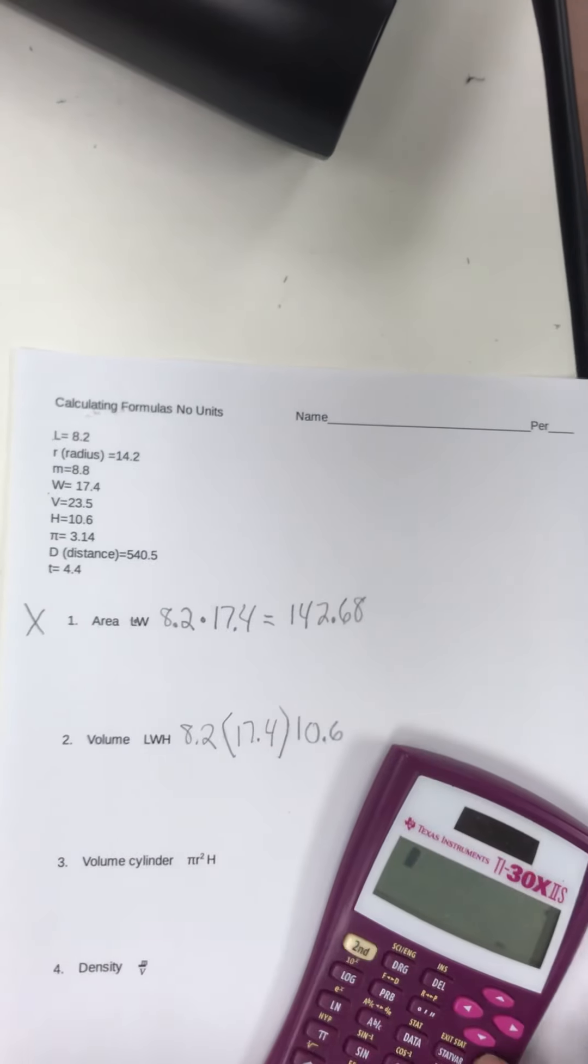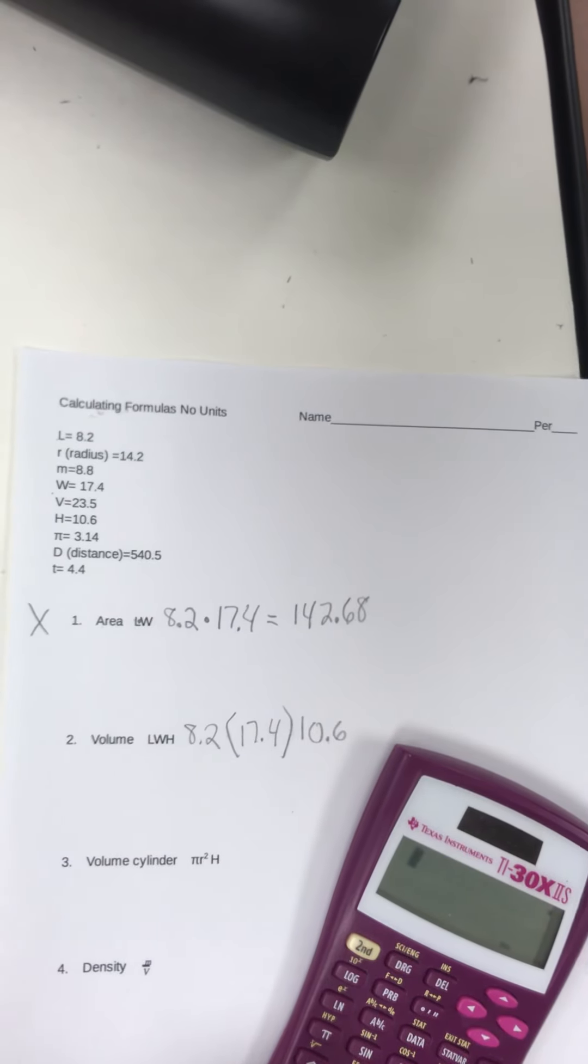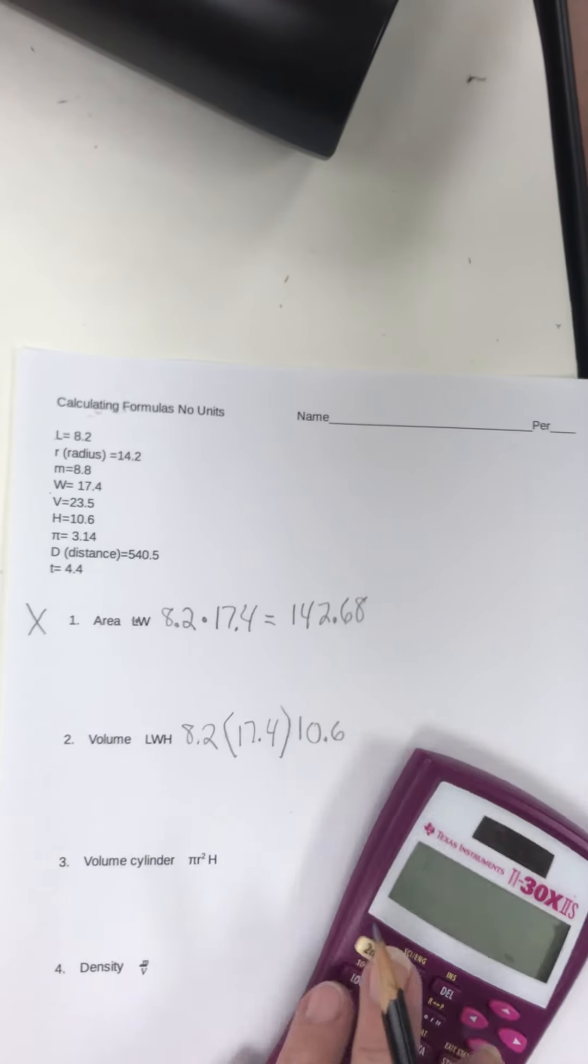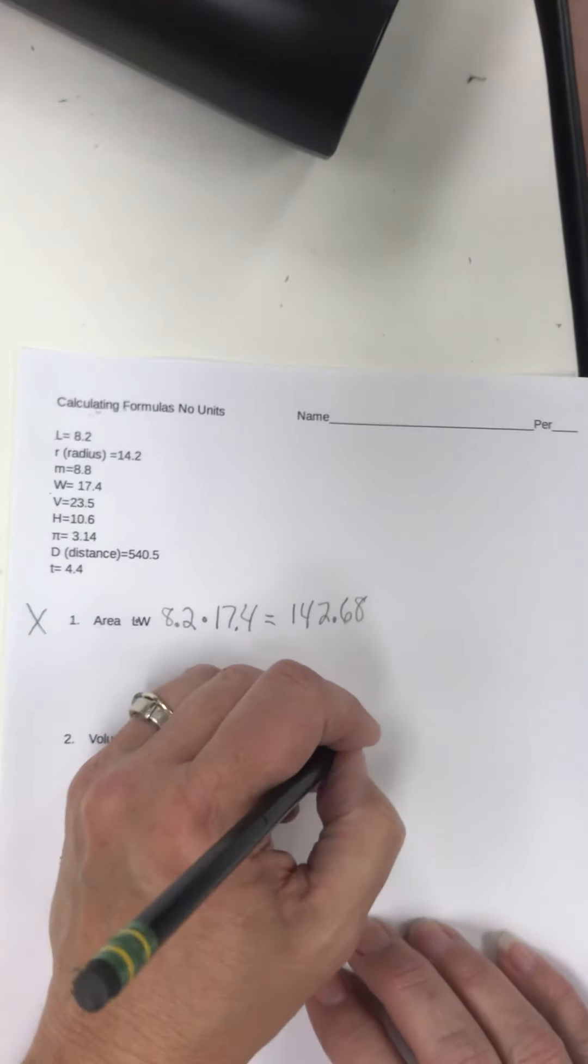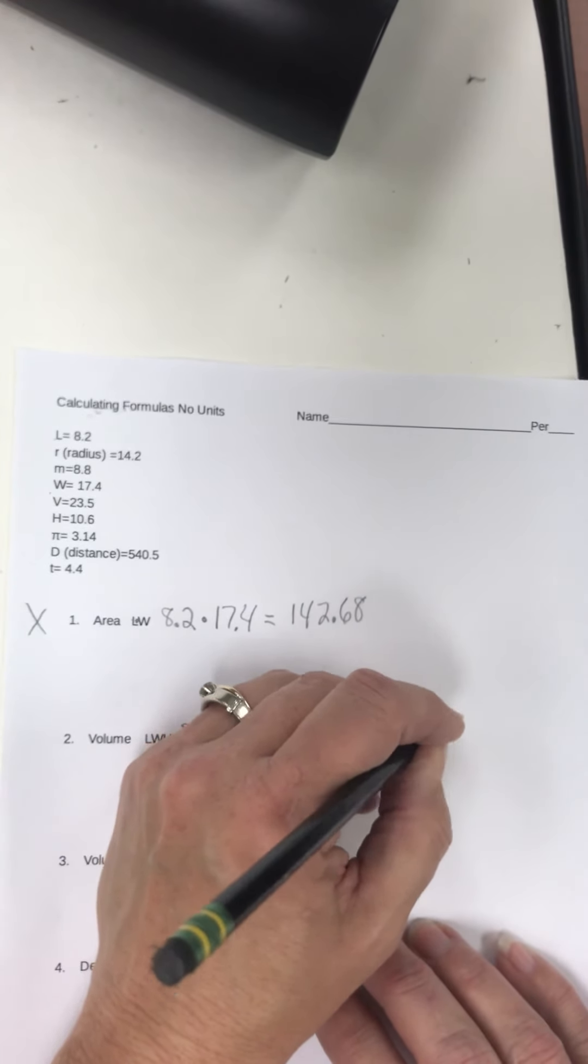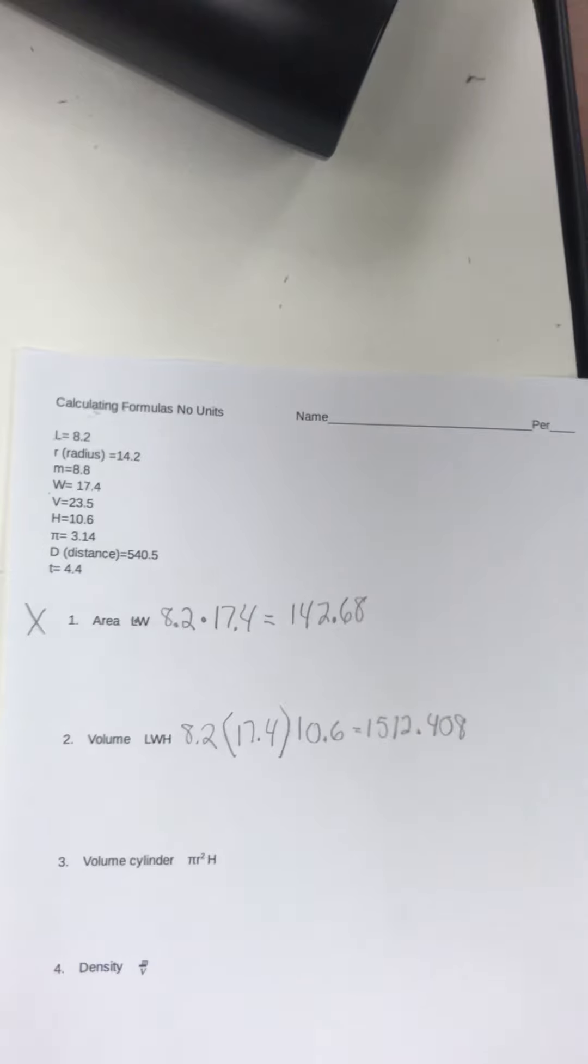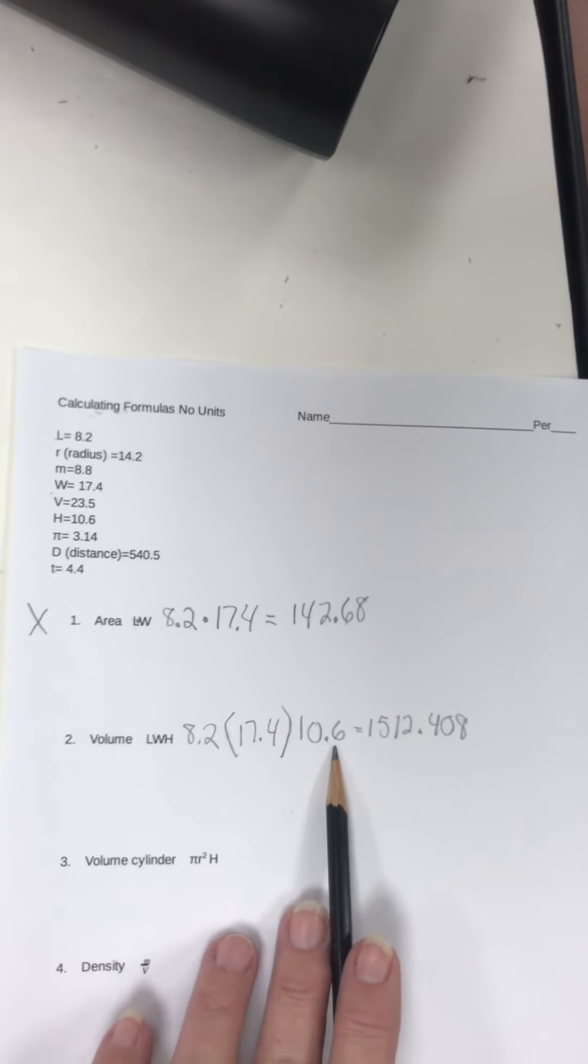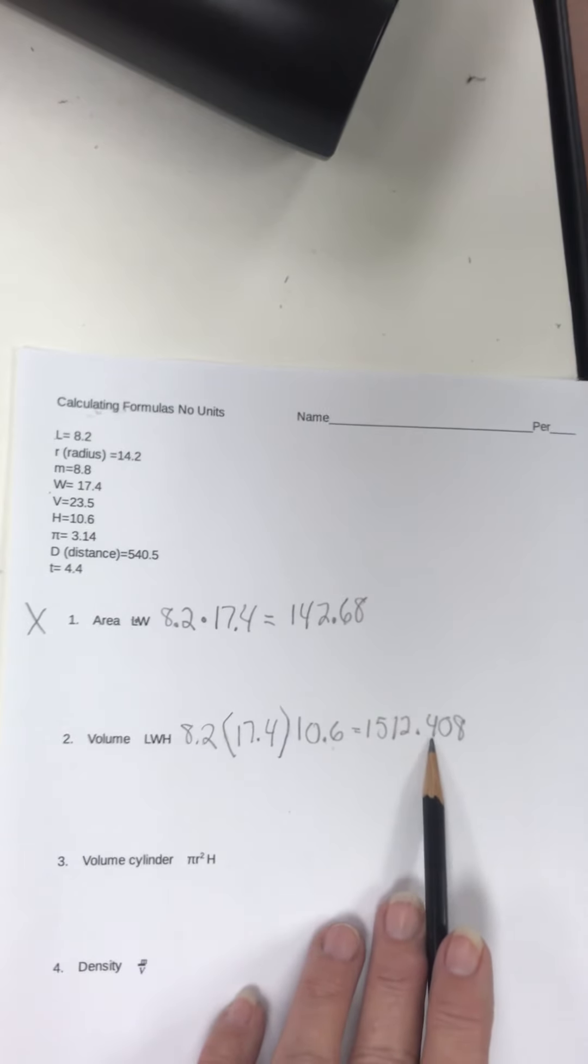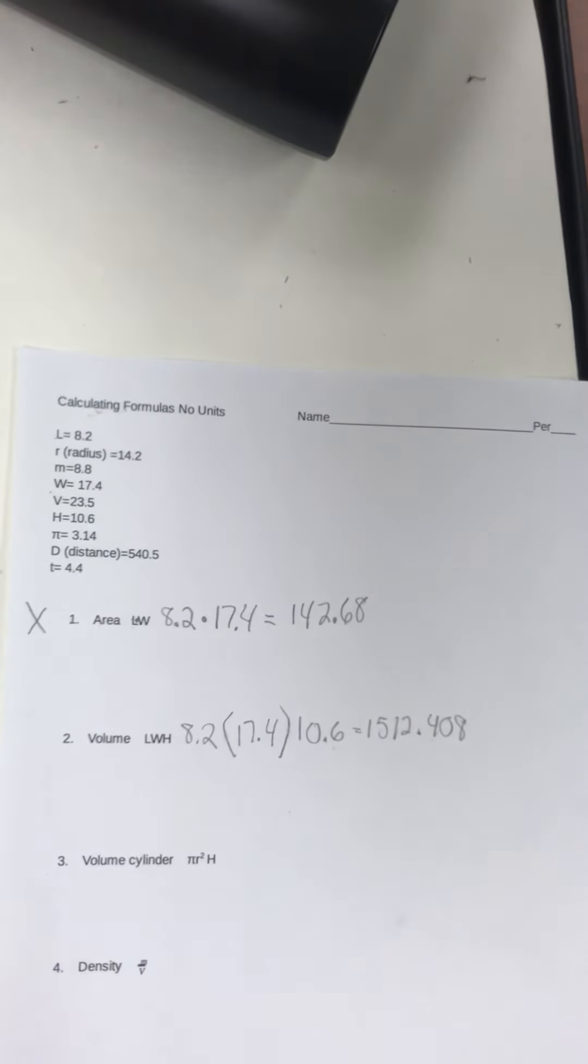So I would take my handy-dandy calculator, and I would calculate that out. And I already did that. I get 1512.408. And remember, when you have units, when we add units to this, you'll have to round the sig figs. You know, these, if these were all measurements, and they are, they all have one decimal place. So the least number of decimal places is one. So you'd have to round to the first decimal place, the four. But we're not going to worry about that right now.